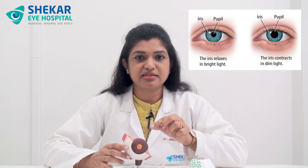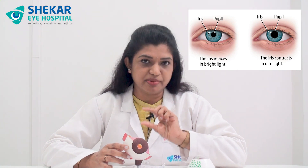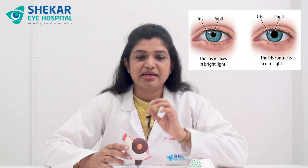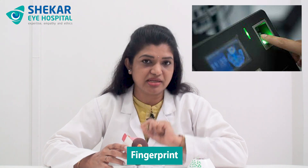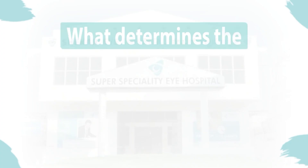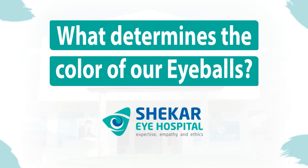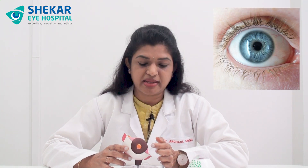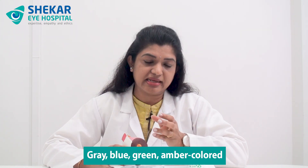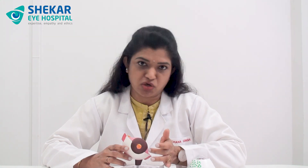Iris has various colors and patterns which vary from person to person and are unique to each individual. Just like our fingerprint which is unique for a person, iris scanning is also unique and can be used as a biometric measurement. What determines the color of our eyeball? It is the iris, which contains a pigment called melanin — the same pigment present in our skin and hair. Depending on the amount of melanin, the color can vary from light brown to dark brown, or it can be gray, blue, green, or amber.